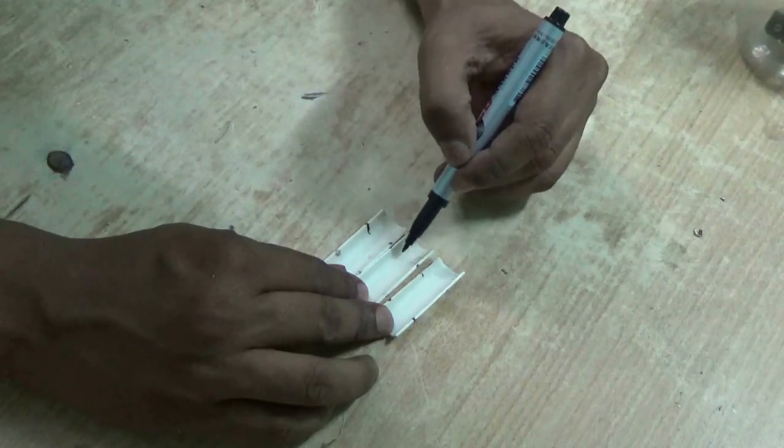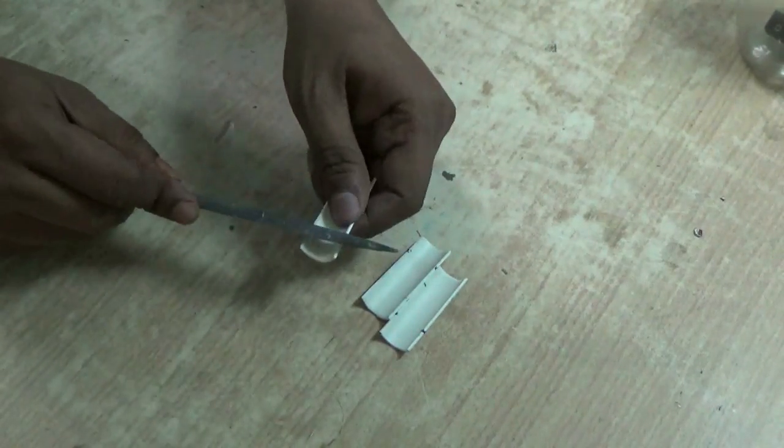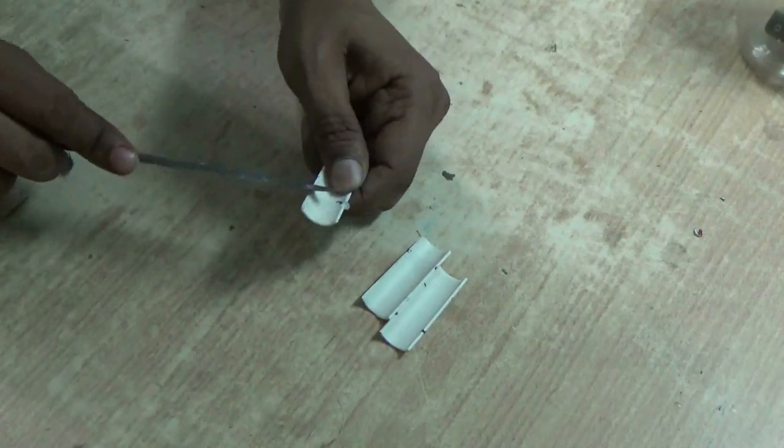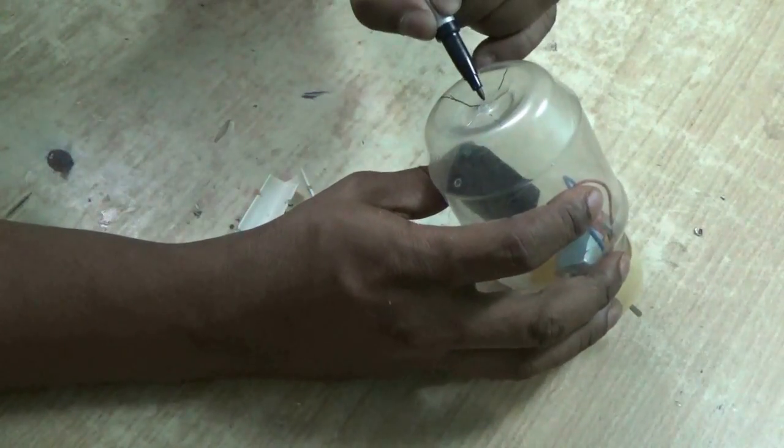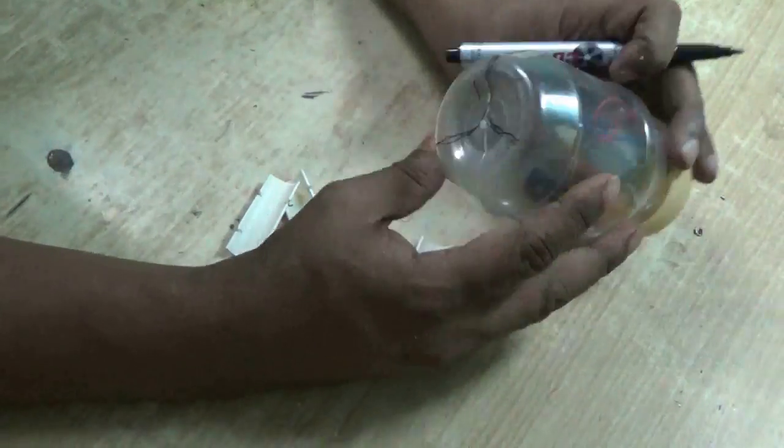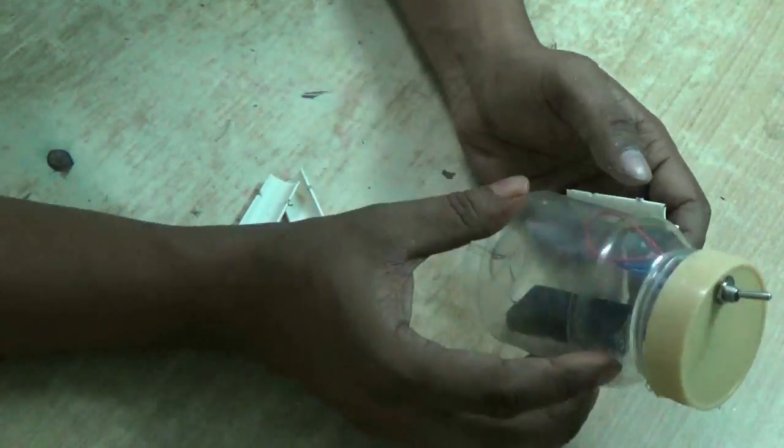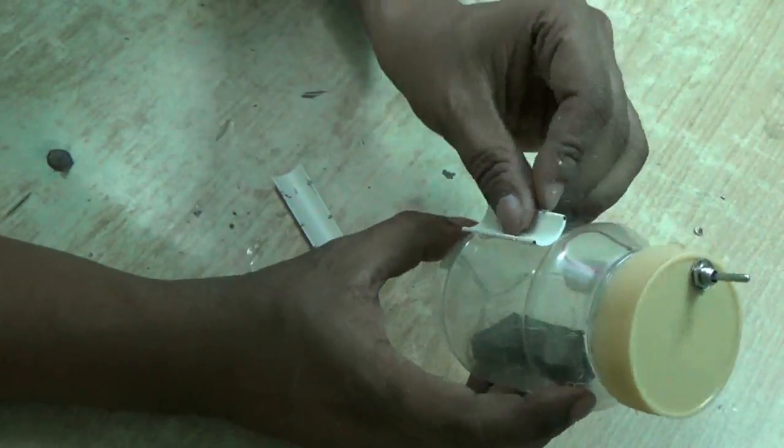Mark two lines, and along those dots cut some grooves using a knife or a file. Now the bottle divide into three sections. Along each section, glue these pieces of pipes. Make sure they are straight.